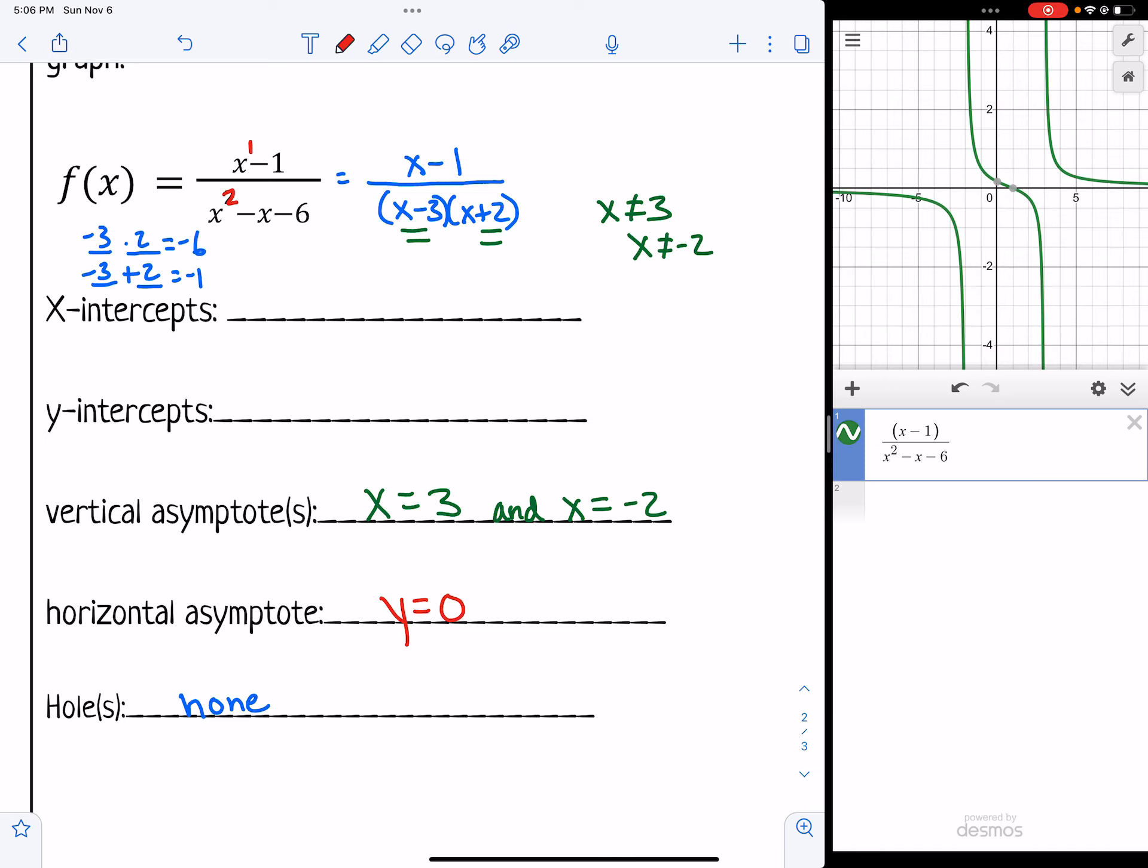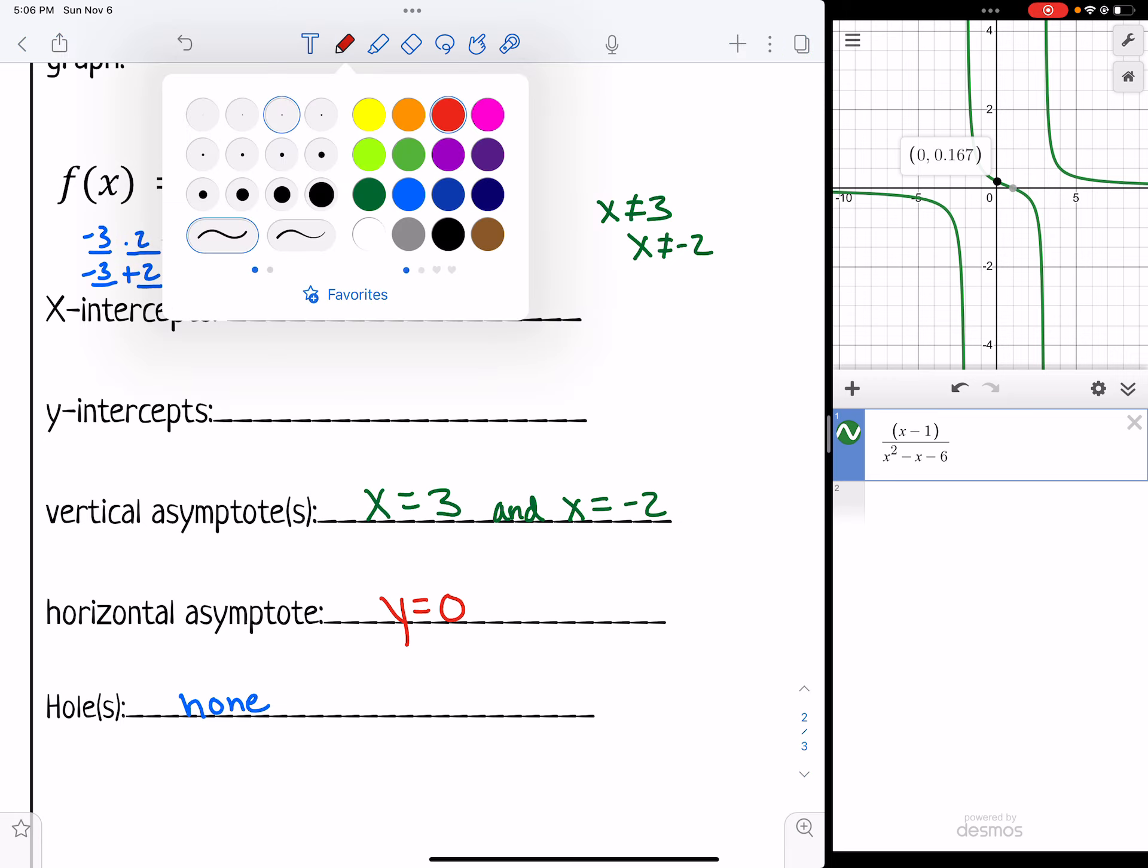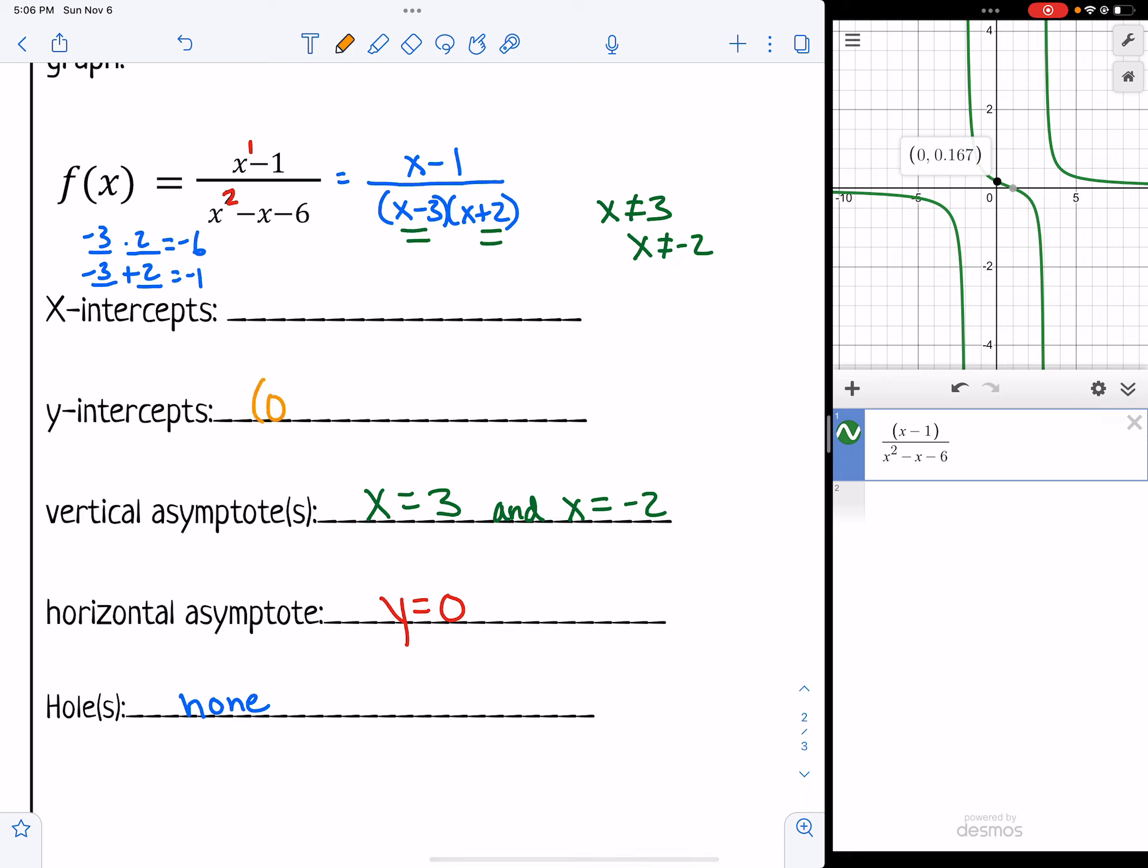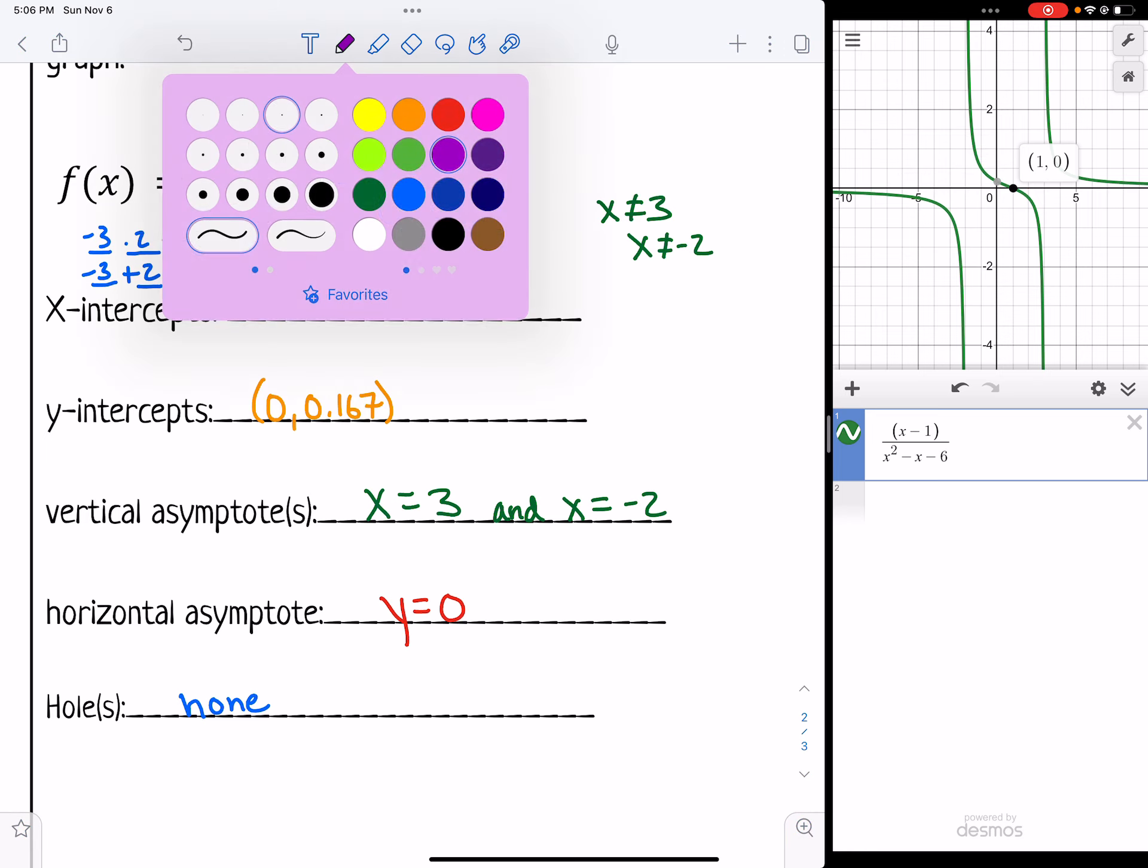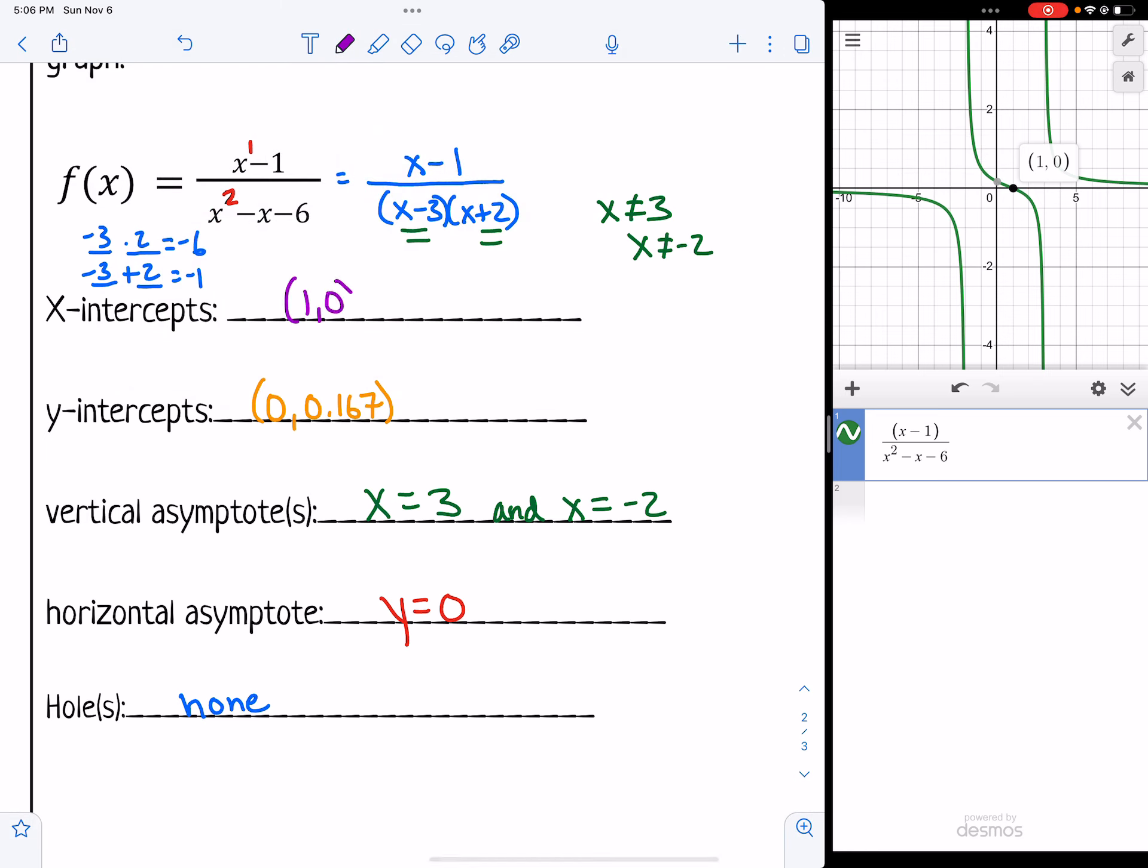So let's see. I've got a y intercept at 0.167. So let me put that there, 0.167. And then I have an x intercept at 1.0.